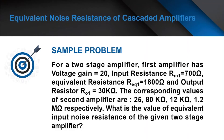Sample problem. For a two-stage amplifier: the first amplifier has voltage gain 20, input resistance 700 ohms, equivalent resistance 1,800 ohms, and output resistance 30 kilohms. The corresponding values of the second amplifier are: voltage gain 25, input resistance 80 kilohms, equivalent resistance 12 kilohms, and output resistance 1.2 megaohms, respectively. What is the value of the equivalent input noise resistance of the given two-stage amplifier?